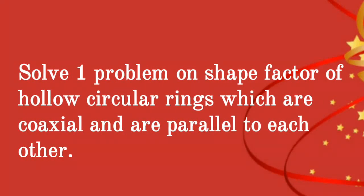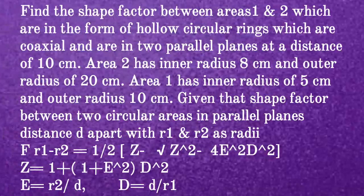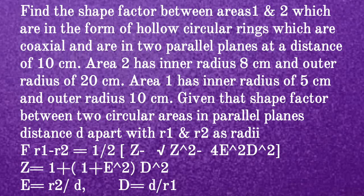We will solve a problem on the shape factor of hollow circular rings which are co-axial and parallel to each other. Find the shape factor between areas 1 and 2, which are hollow circular rings in two parallel planes at a distance of 10 cm. Area 2 has inner radius 8 cm and outer radius 20 cm. Area 1 has inner radius 5 cm and outer radius 10 cm.